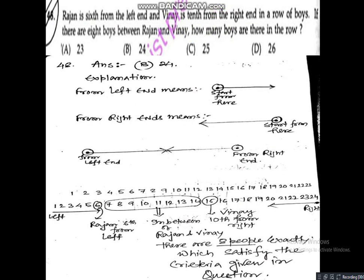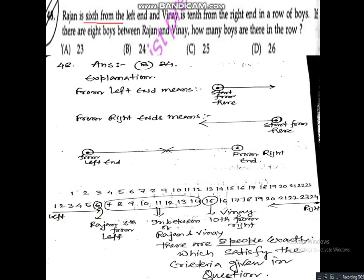Question 48 is a reasoning question. Rajan is 6th from the left and B9 is 10th from the right end of a row. If there are 8 boys between Rajan and B9, how many boys are there in the row? Option A: 23, Option B: 24, Option C: 25, Option D: 26. Correct answer is Option B — 24.